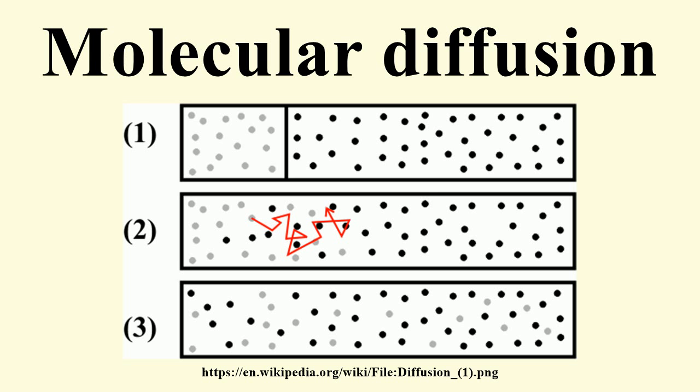the partial pressure of A changes by dPA over the distance dx. Similarly, the partial pressure of B changes dPB. As there is no difference in total pressure across the element we have.